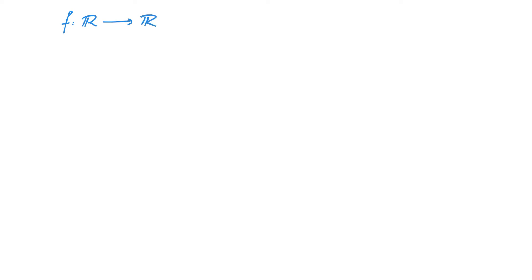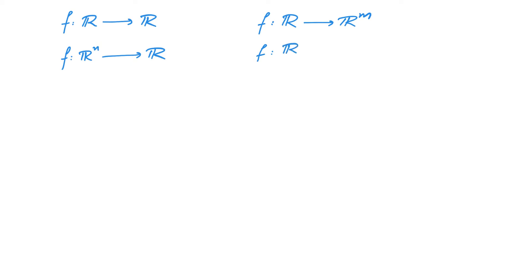Recall that we could easily extend the definition of differentiability for functions f from R to R to differentiability for functions f from R to Rm. The basic idea was that such a function is differentiable if and only if each component function is differentiable. For the same reason, once we have differentiability of functions f from Rn to R, we can easily extend it to differentiability of functions f from Rn to Rm. Once again, the basic idea is that each component function should be differentiable.